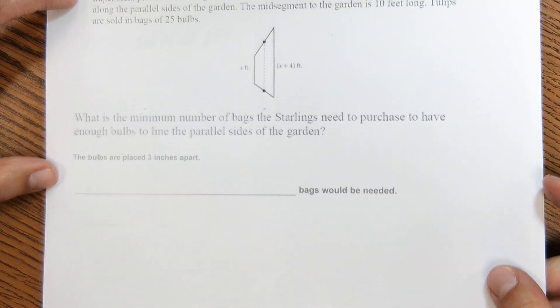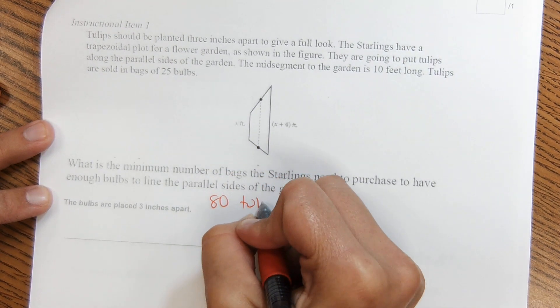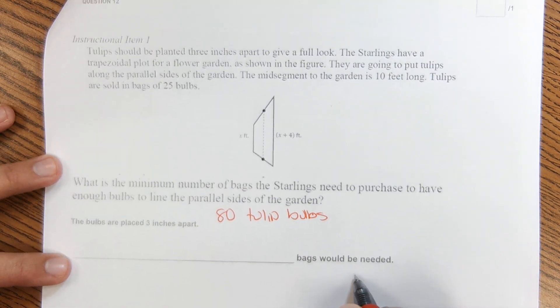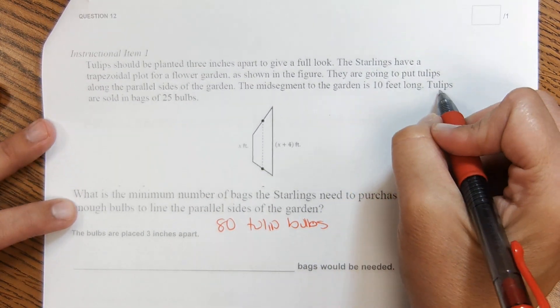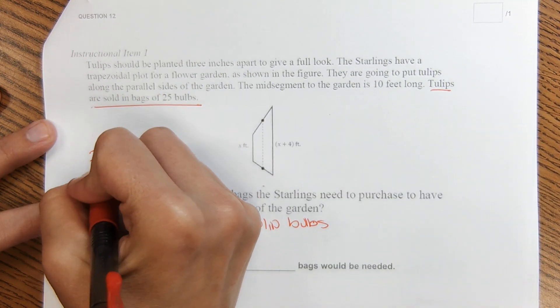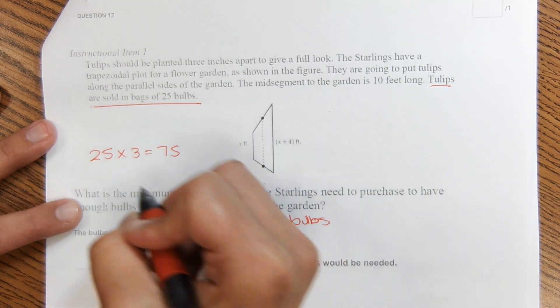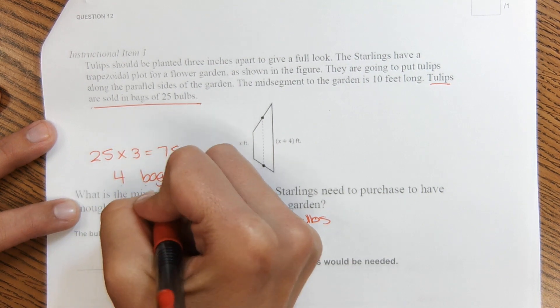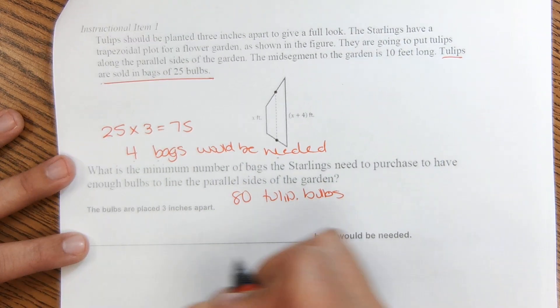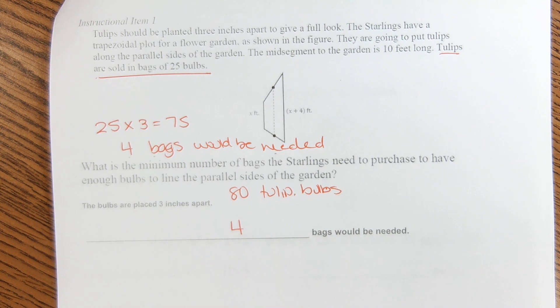This one, it says, okay, the bulbs are placed 3 inches apart. You have 80 tulip bulbs. How many bags will be needed to purchase? And the problem up here, it says tulips are sold in bags of 25. As you may know, 25 times 3 would be 75. That doesn't quite cover it. So we're going to need four bags. Four bags would be needed to cover the - to get 80 tulip bulbs. So right here, just four. Okay, and that is all for this one.